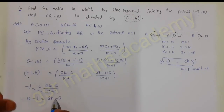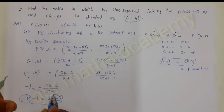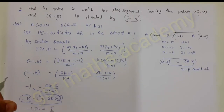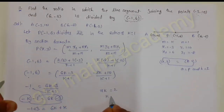Expanding: minus k minus 1 equals 6k minus 3. Transporting minus k to the other side and minus 3 to the other side: minus 1 plus 3 equals 6k plus k. So 2 equals 7k, giving k equals 2 by 7.